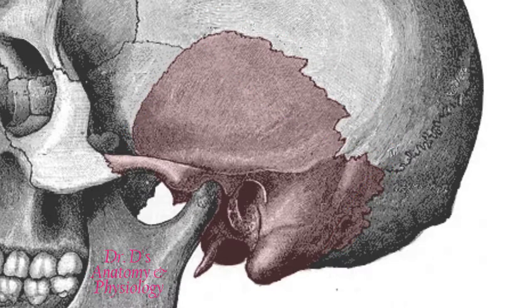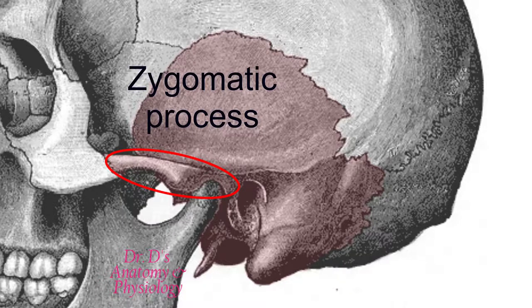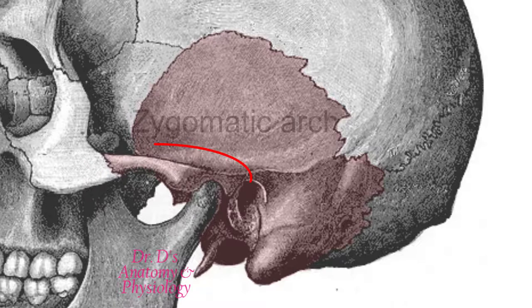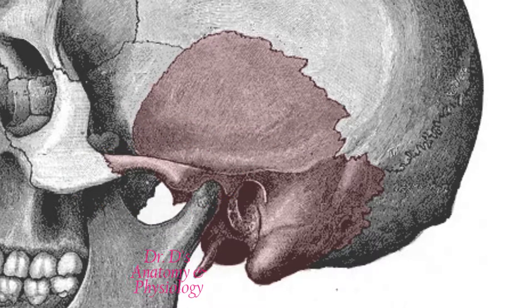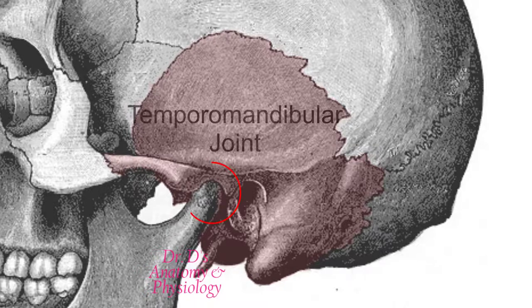The squamous portion will also contain a process that extends first laterally and then curves anteriorly — the zygomatic process. The zygomatic process is going to join with the temporal process of the zygomatic bone to give you the zygomatic arch. This arch is also going to have an important articulation — the only movable articulation in the skull, if you discount the ear ossicles — the temporomandibular joint.